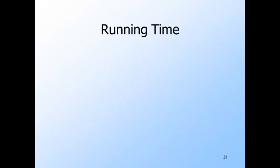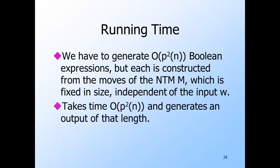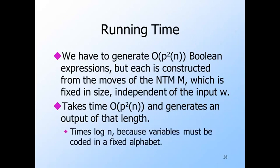Now consider how long it takes to write down the moves-right expression. Moves right consists of the AND of two P-squared-of-N expressions — two for each ID I and position J. One says the symbol doesn't change if the head is not nearby; the other says if the head is nearby, the six relevant symbols reflect one move of M. Each expression can depend on the number of states, symbols, and moves of M, but none of this depends on N — each expression is of constant size. So the transducer can output moves right in time that is polynomial in the length of its input W. There is another factor of log N because we must write the Boolean expression in a fixed alphabet, but factors of log N cannot take us out of the polynomial class.